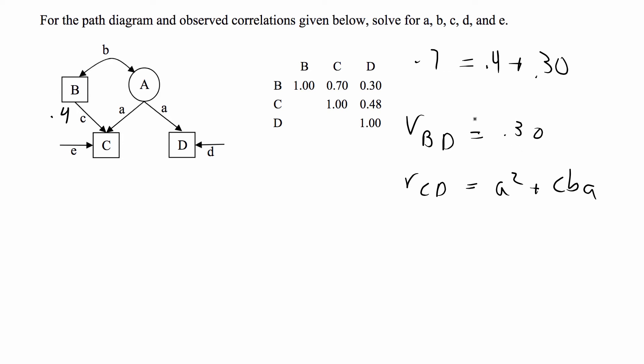So plugging in for everything that we found already, we have this, and now let's use that to find A. So R_C,D is 0.48, which is equal to A squared plus C,B,A.